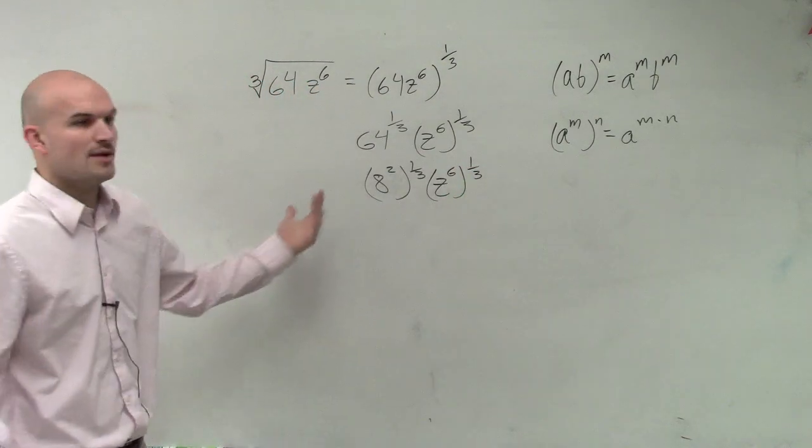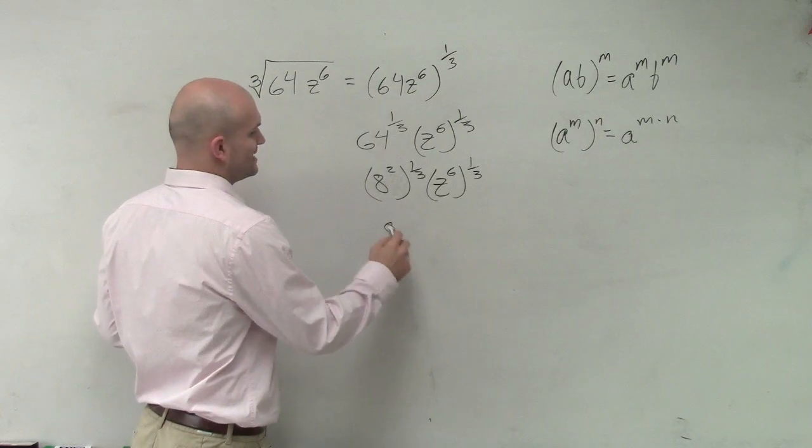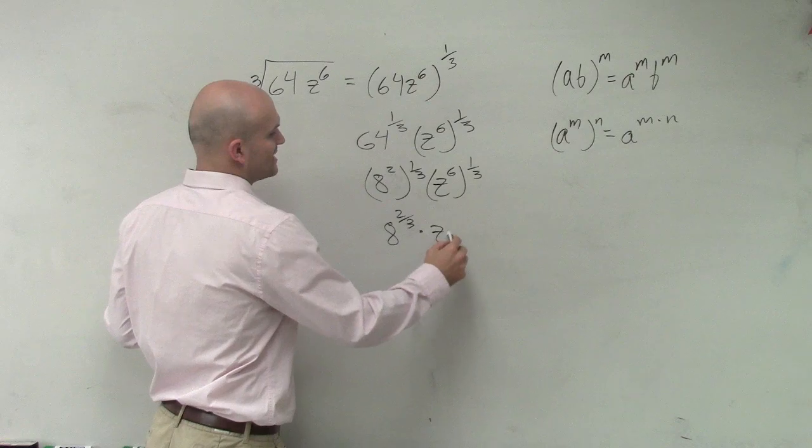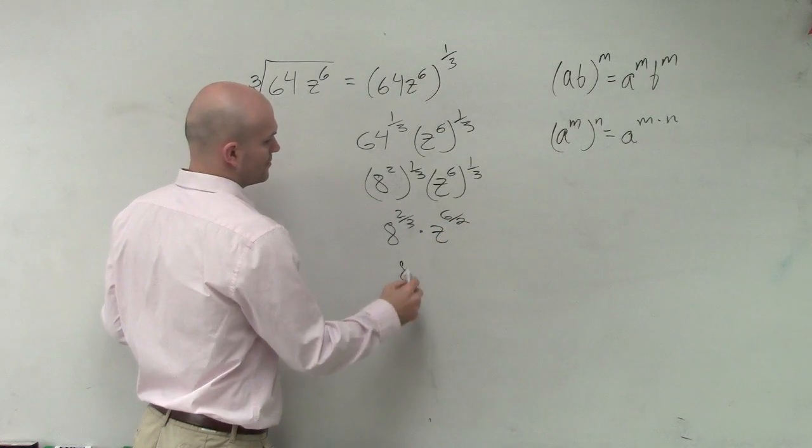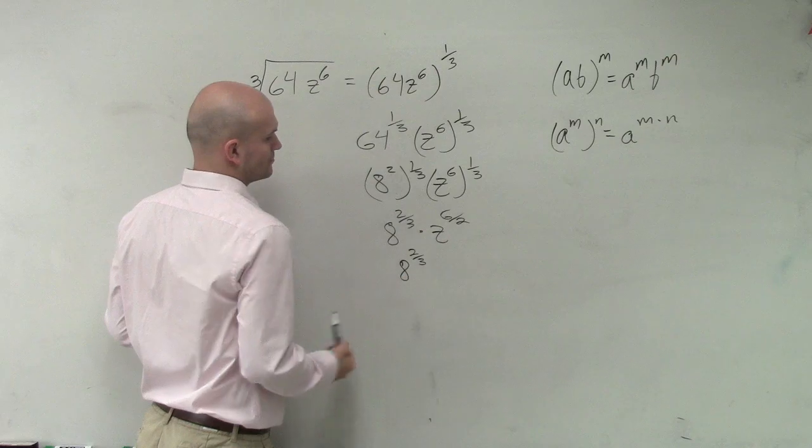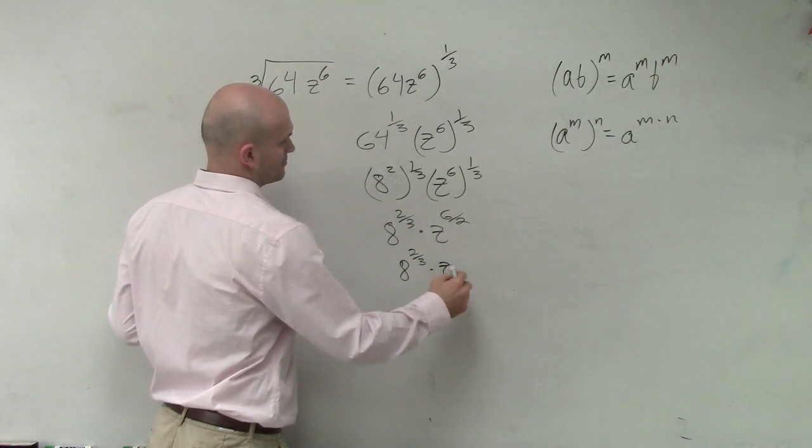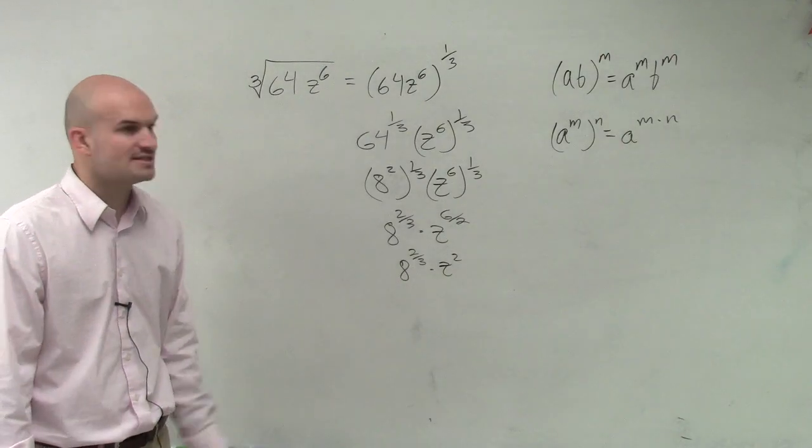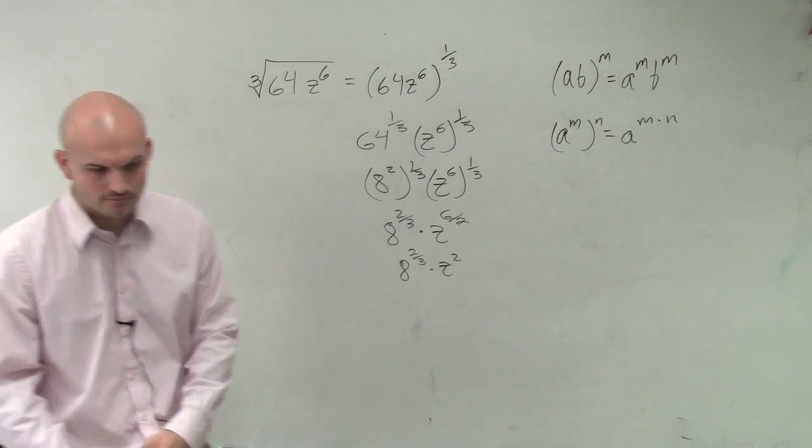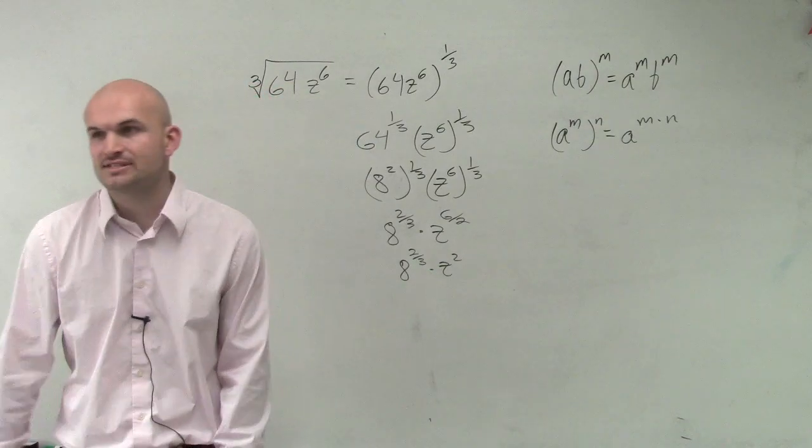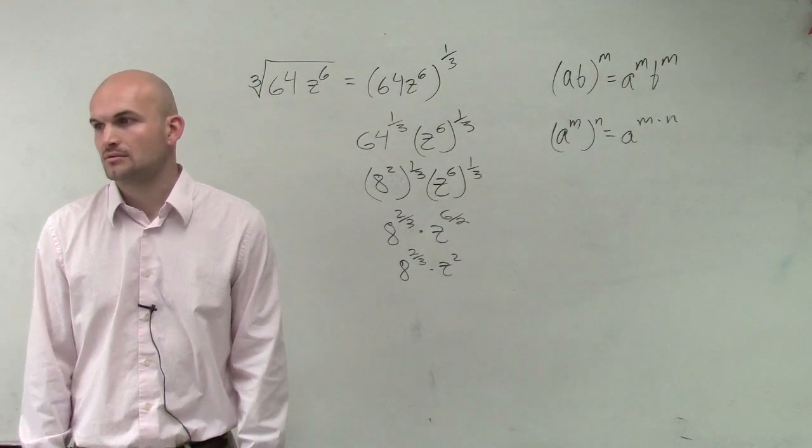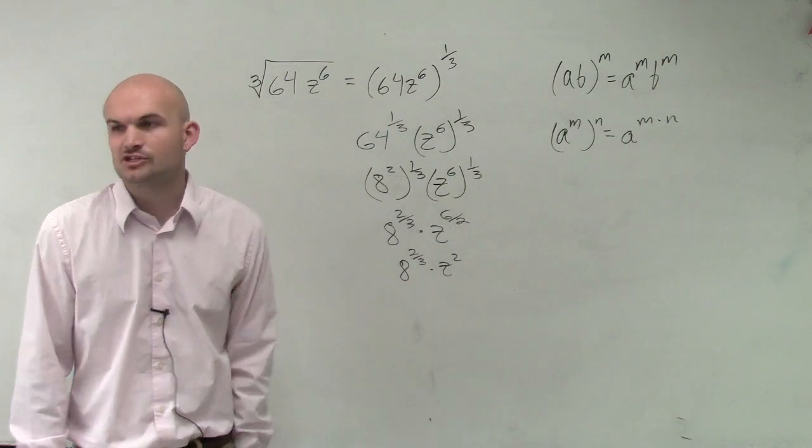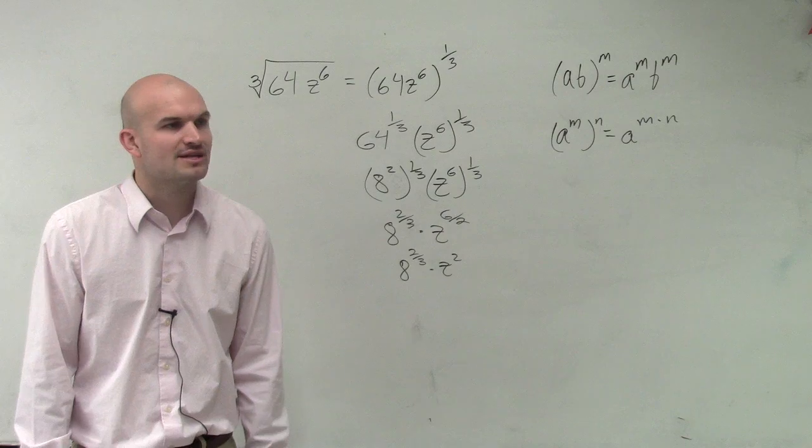So therefore, when I multiply through, I get 8 to the 2 3rds times z to the 6 halves. OK, but now we look at this and we're like, all right, that, you know, z's simple, but can I rewrite 8 then, even simpler? What could I rewrite 8 as? How could you rewrite 8? Could you write 8 as a base of something and raise to an exponent?